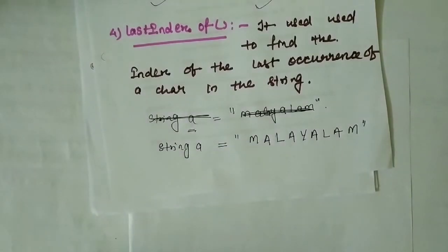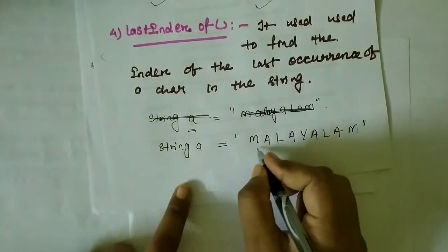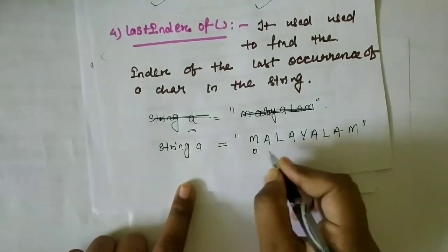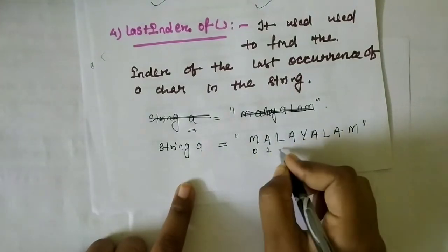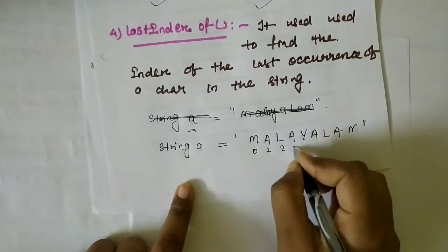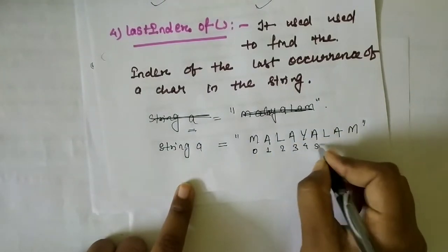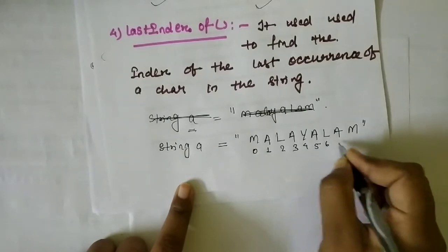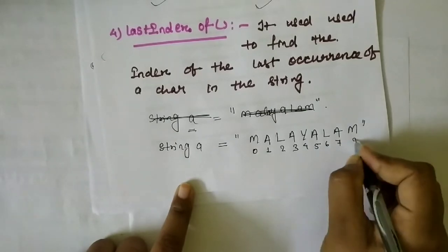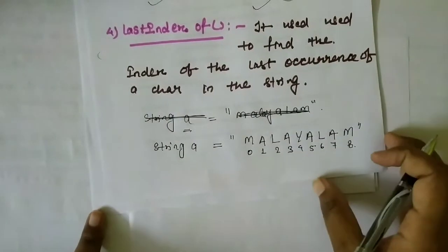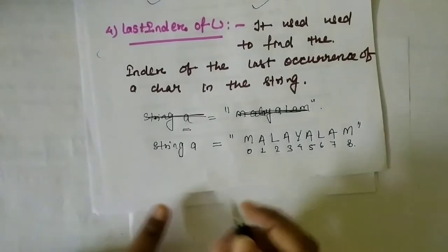Now it is clear. For our table, we can write the positions: 0, 1, 2, 3, 4, 5, 6, 7, 8. How do we use this function? Simply write the variable name 'a', since 'a' stores the string.